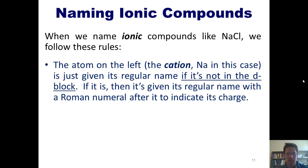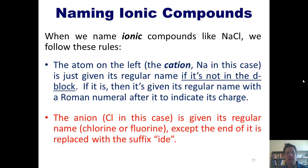Remember, the d-block elements sometimes can have varied charges. So, for those elements, if they are the cations, we have to specify what positive charge they have by putting brackets next to their name, and inside the brackets we put a Roman numeral indicating what charge they have. The anion, Cl in this case, is given its regular name, chlorine or fluorine, except at the end of it, it's replaced with the suffix "-ide". So, in this case, it's chloride. So, this molecule will be called sodium chloride.